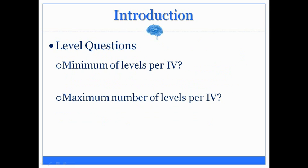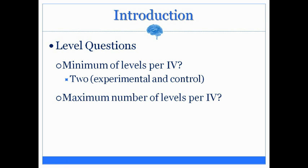Here are two questions regarding levels of an independent variable. The first question is: what is the minimum number of levels that can exist inside of an independent variable? The minimum number of levels needed is two. Two levels make up an IV, and that can consist of an experimental and a control. The experimental is the manipulation, and the control is the comparison. The control is essential because it allows you to compare the experimental to it, which allows you to determine cause and effect.